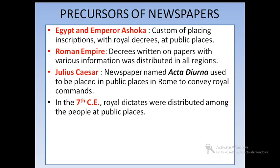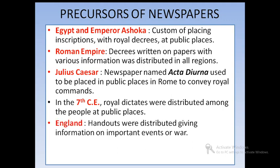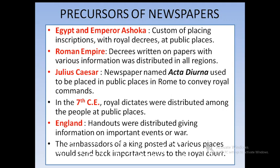In the seventh century CE, royal dictates were distributed among the people at public places. In England, handouts were distributed giving information on important events and wars. Travelers arriving from far away places would spice up stories of those places and narrate them to local people. Some kings posted their ambassadors at various places, and these ambassadors conveyed important news of their region to the royal court.